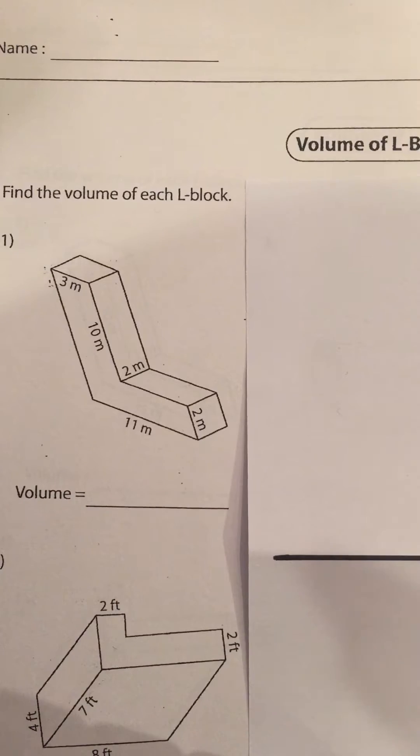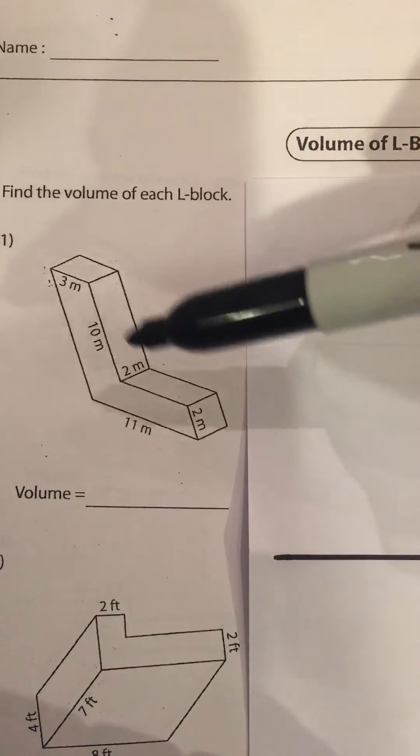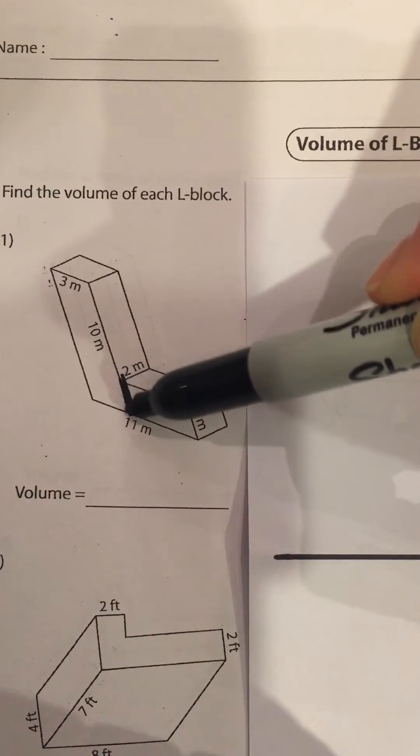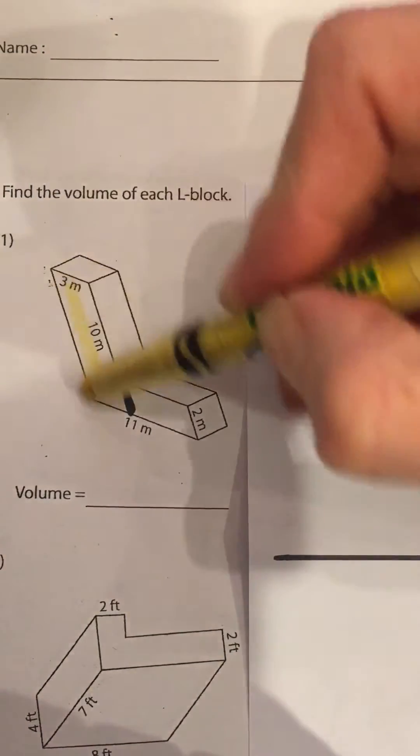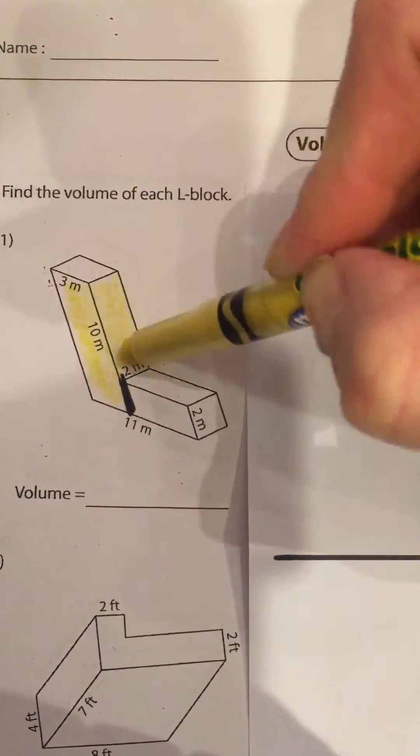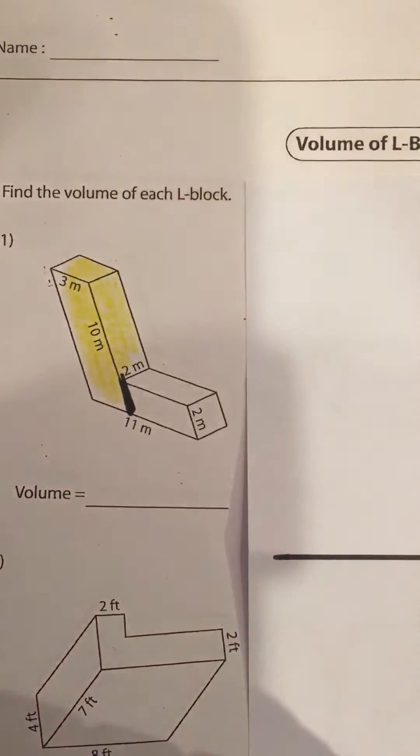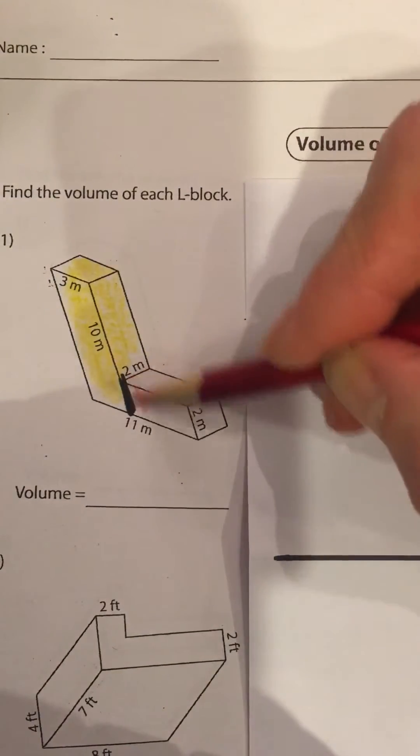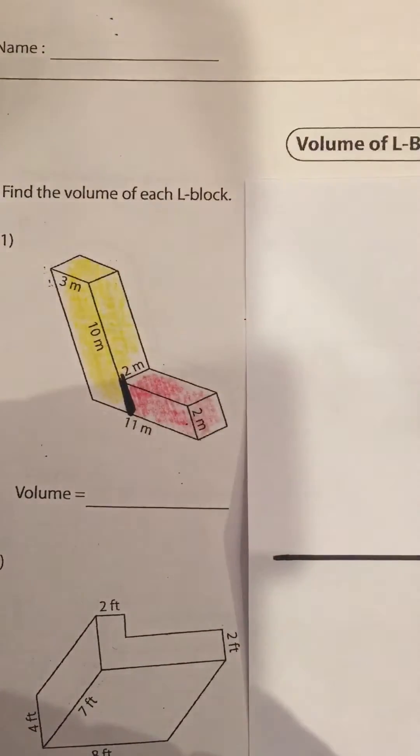And then we'll skip way ahead. So we have this shape here and I think I'm going to split the two shapes right there so you can see. The first shape I'm going to be coloring in yellow so you can get a clear visual of it, and the second part of the L I'll shade in red.